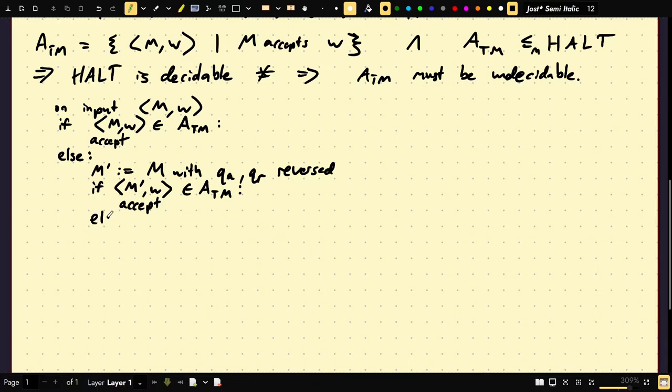Else, here, we can just simply reject. We can reject here because we know that M neither accepts nor rejects. So, what else could it do? If the machine doesn't accept or it doesn't reject, it has to loop forever.